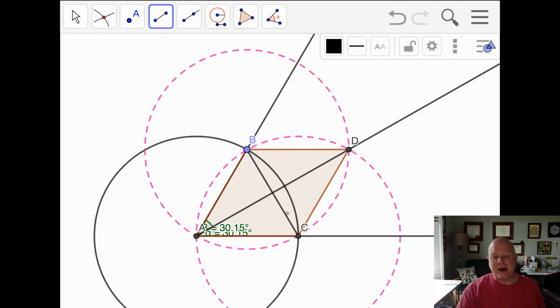So not only does this cut this angle into two, but it bisects, or cuts into two equal parts, these two segments, and it's perpendicular.